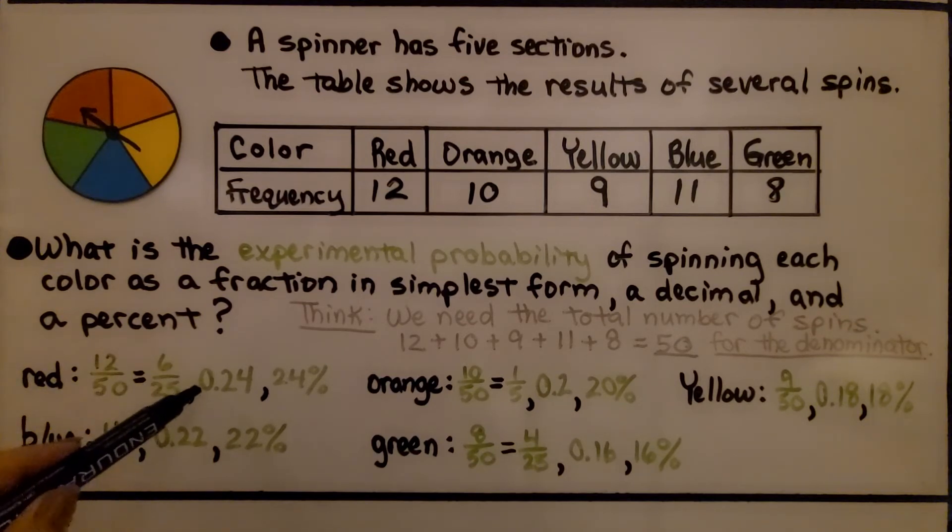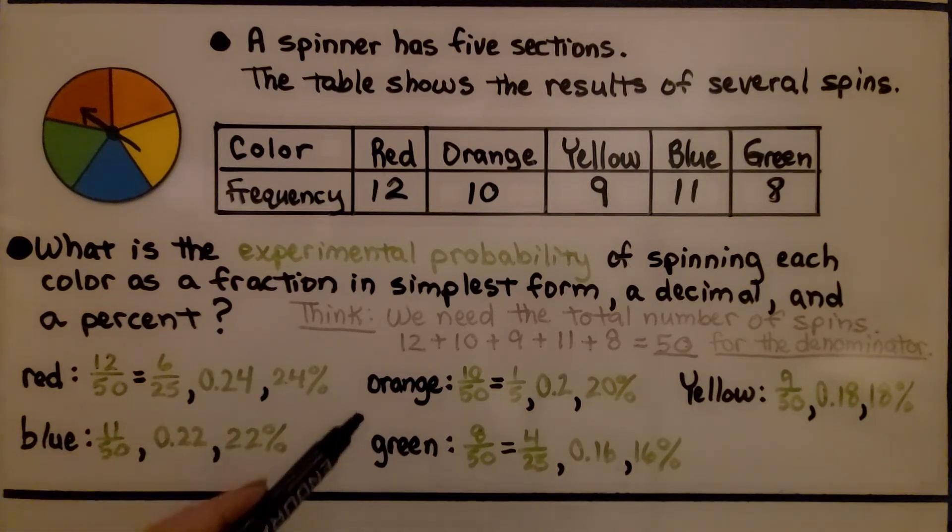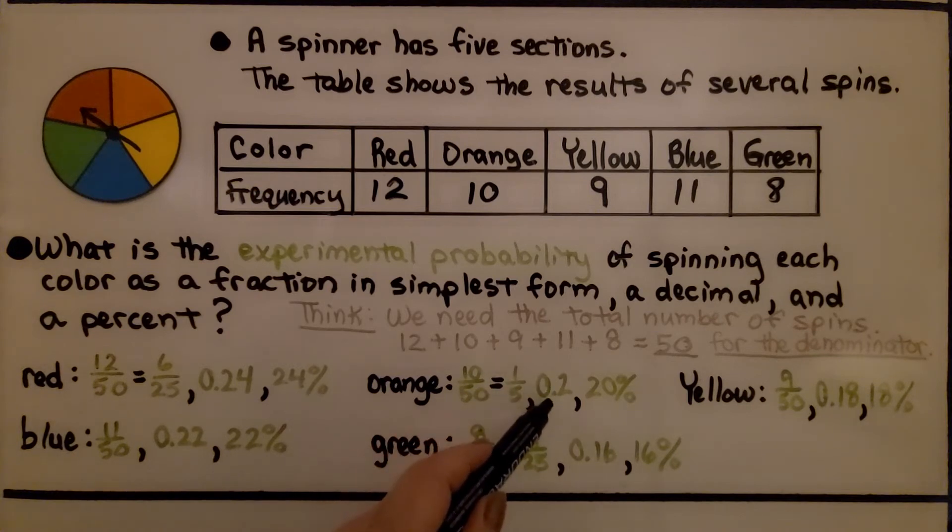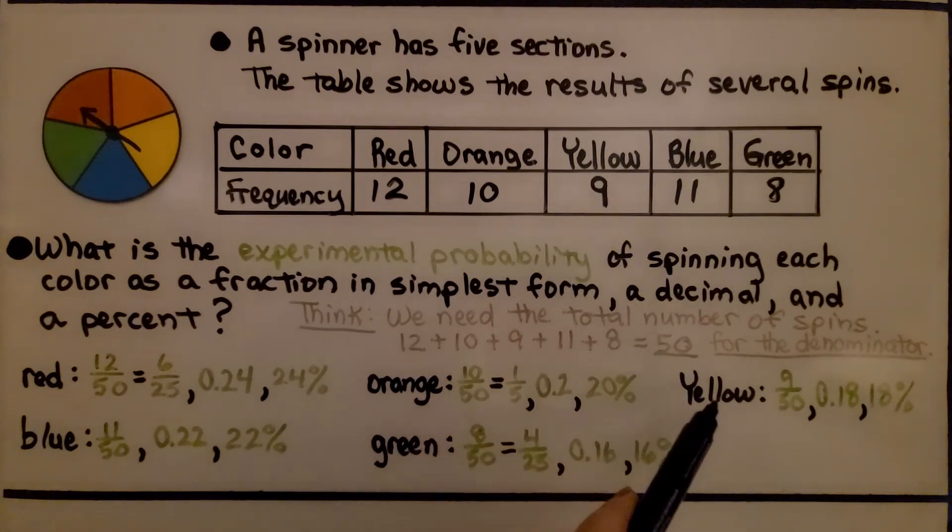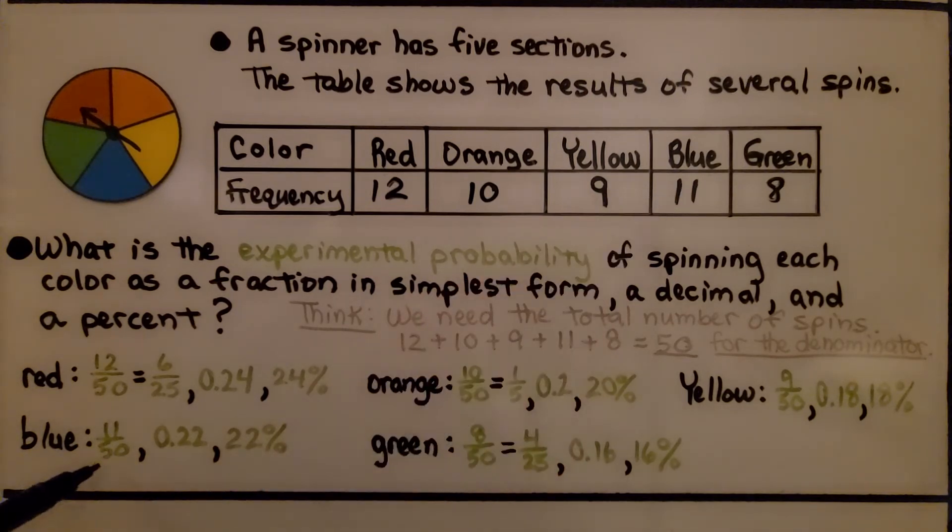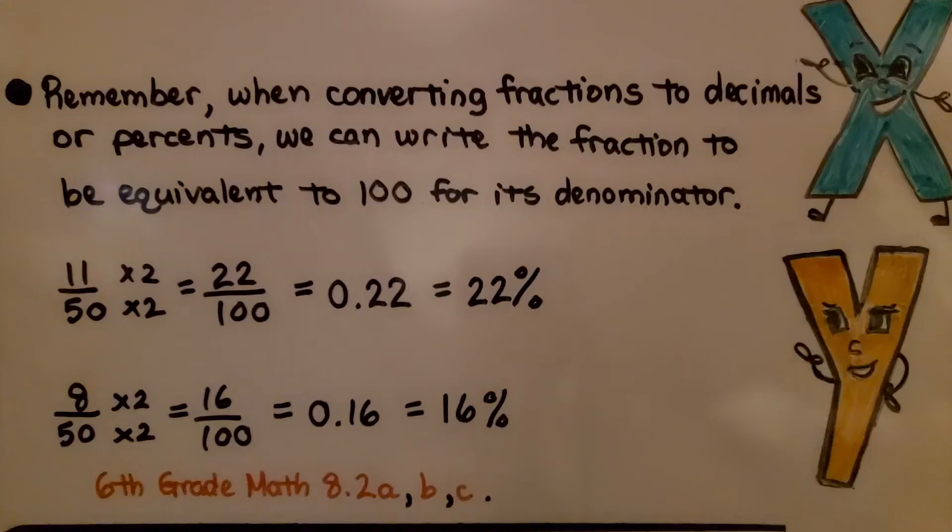As a decimal, it's 24 hundredths, and as a percentage, 24%. For orange, we have 10 out of 50, or 10 50ths, which equals 1 5th, which is 2 10ths or 20 hundredths or 20%. For yellow, we have 9 out of 50, which is already in simplest form, 18 hundredths or 18%. For blue, we have 11 out of 50, 11 50ths, which is 22 hundredths, 22 percent. And for green, we have 8 out of 50, 8 50ths, which is 4 25ths, 16 hundredths or 16%.